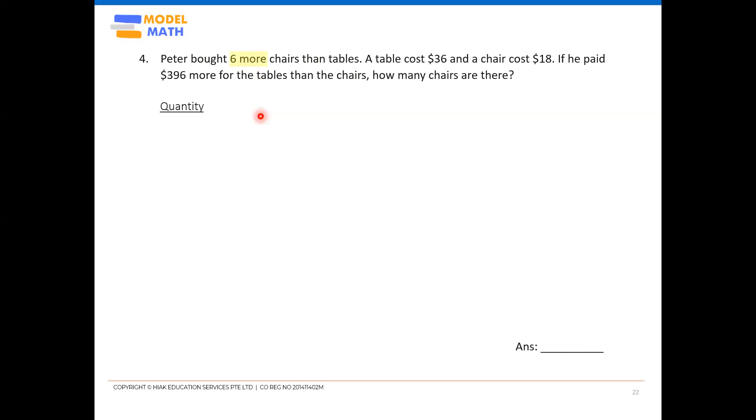So I hope we can tell quantity in this case is the number of items, whereas the values are the cost of the items. Okay, so it's a very simple comparison model, six more chairs than tables.